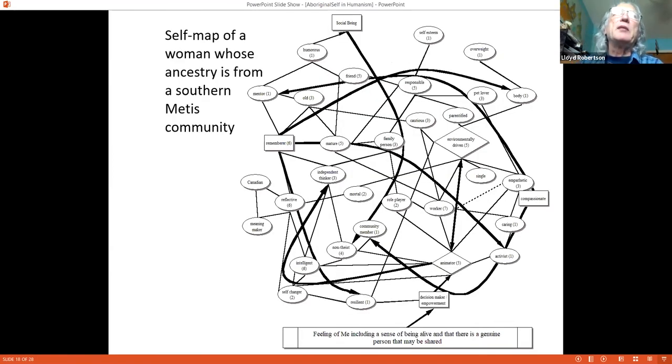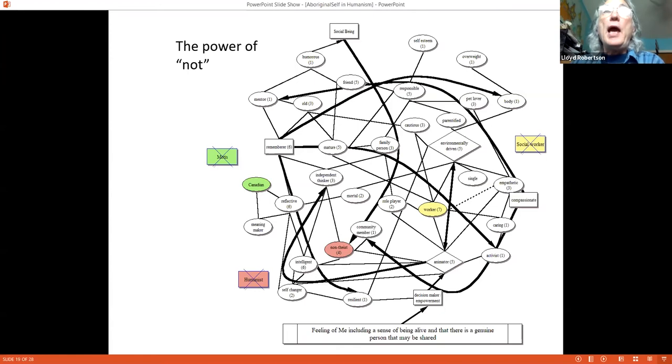Here we have the map of another woman from a Métis community, a Southern Métis community. And the base of Judy's self is a feeling that she's a genuine, alive and unique person. Other themes in this self include being a social being, remembering, being a decision maker, being compassionate and the thick black lines emanating from each represent a narrative or story that she tells herself. So the memes are to be thought of as a part of an outline of a story that she can recall in particular contexts.